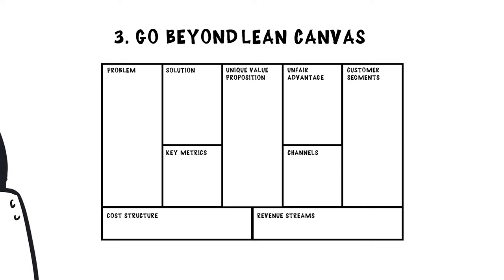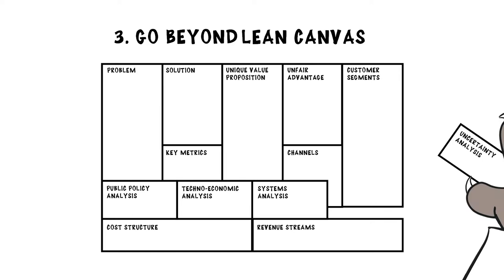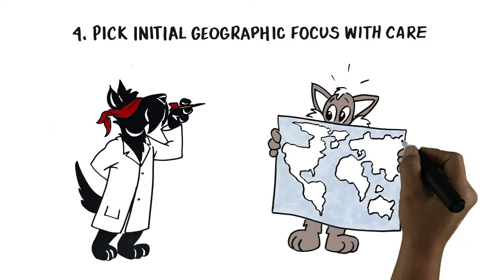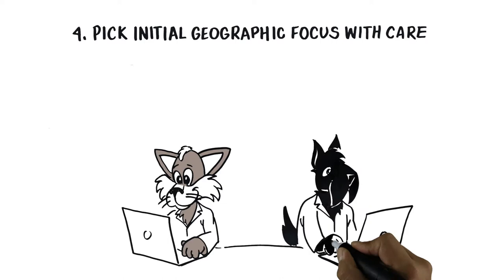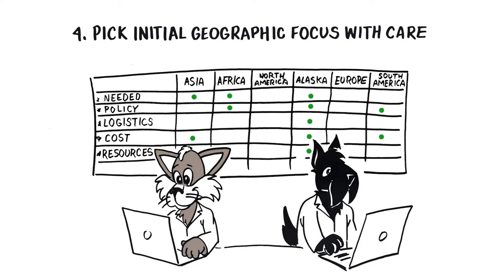Three, go beyond a lean canvas model. Add in public policy analysis, technical economic analysis, systems analysis of customers and stakeholders, and uncertainty analysis. Four, pick your initial geographic focus with care. Cleantech policy and innovation ecosystems are very localized. What works well in one community or state or country may not work at all in another.